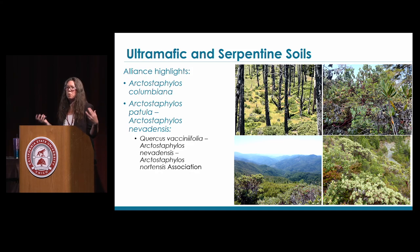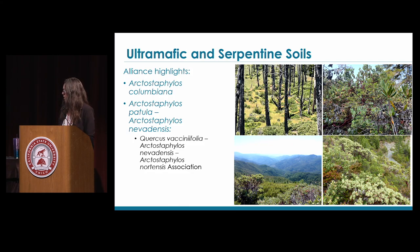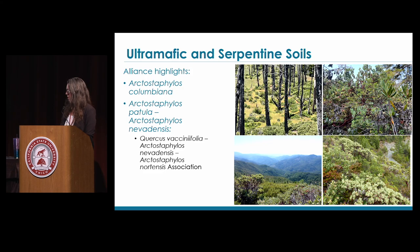There are a couple of new manzanita types. Arctostaphylos columbiana has already been identified as a provisional type in the Santa Cruz classification, but we have 11 new stands — a range extension with more data. We also have a new association with the rare Del Norte manzanita, which only occurs in Del Norte County, along with Knight's manzanita, which also has a limited distribution. We're finding these in serpentine and ultramafic soils in the north coast ranges.